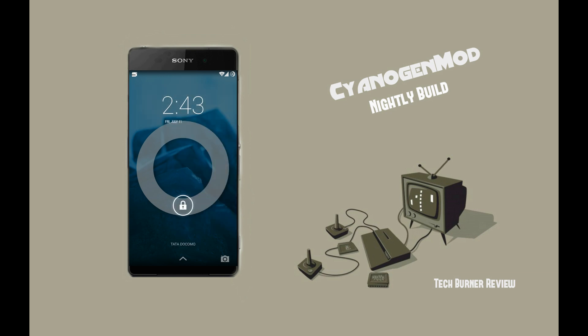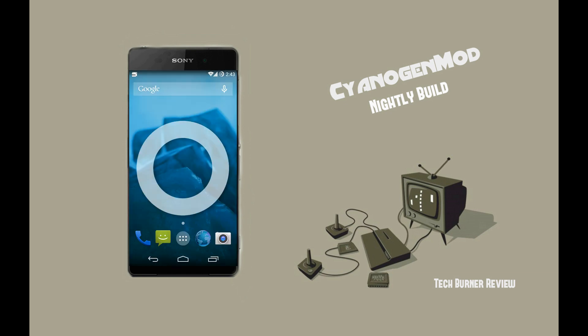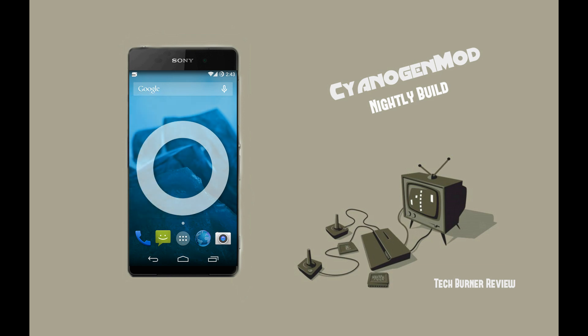This is the default CM Launcher. The only difference between this and the Google Launcher is that you can access Google Now from the home screen itself in the Google Launcher, whereas you can't do it in the CM Launcher — so it is basically a stock launcher. You can also find the OK Google Now option on your desktop.